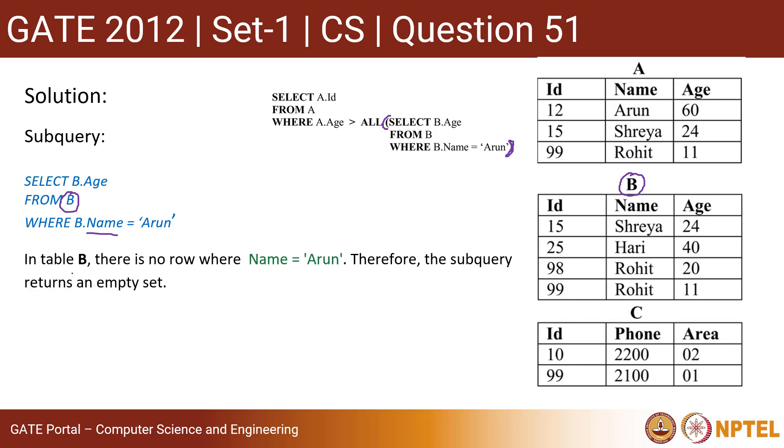In table B there is no row where Name equals Arun. Therefore the subquery returns an empty set. Now it will return the result to the outer query, the main query.